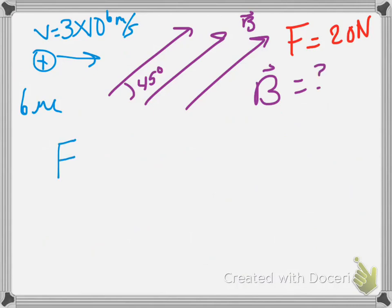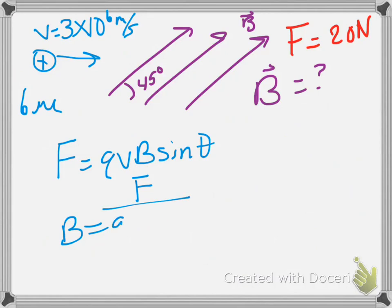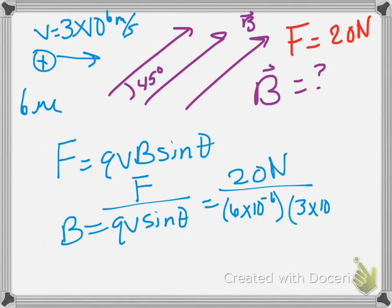Well, if F is equal to QVB sine theta, then B, moving things around, would be F over QV sine theta. So plugging in our numbers, 20 newtons over Q, which is 6 times 10 to the negative 6, V, 3 times 10 to the sixth, and now we actually do have an angle sine of 45 degrees.